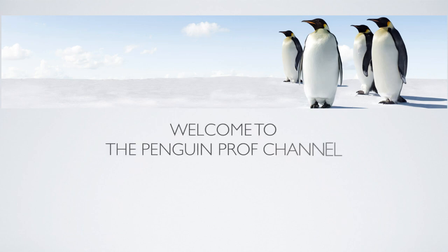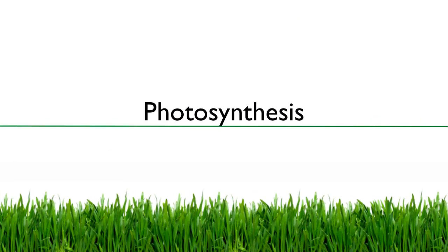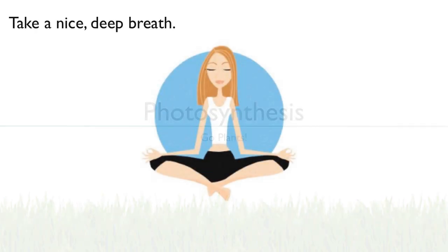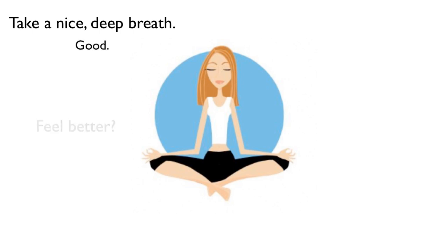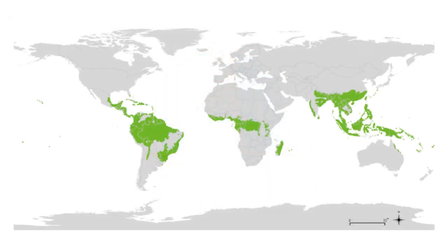Hello and welcome to the Penguin Prof Channel. In today's episode, I'm going to try to explain photosynthesis. Now think about where did that oxygen come from? If you said plants, you're on the right track. If you said rainforests, that's where most people think their oxygen comes from — about 20% of the oxygen that you're breathing right now was made by plants from a rainforest.